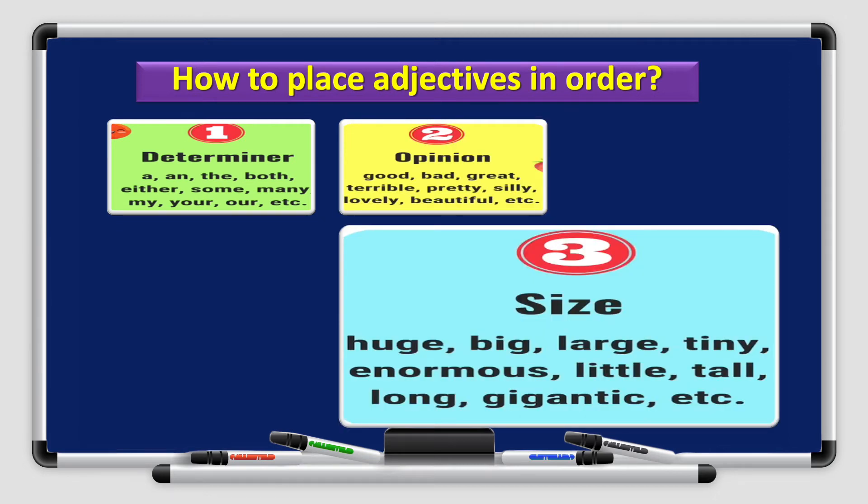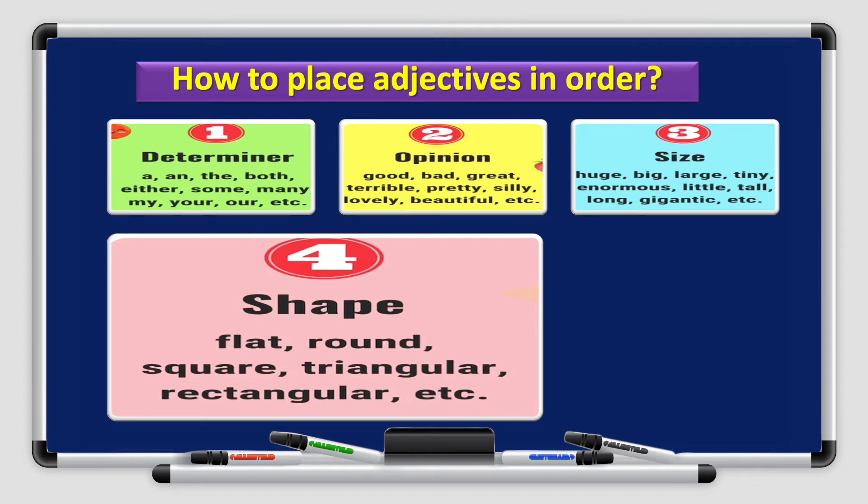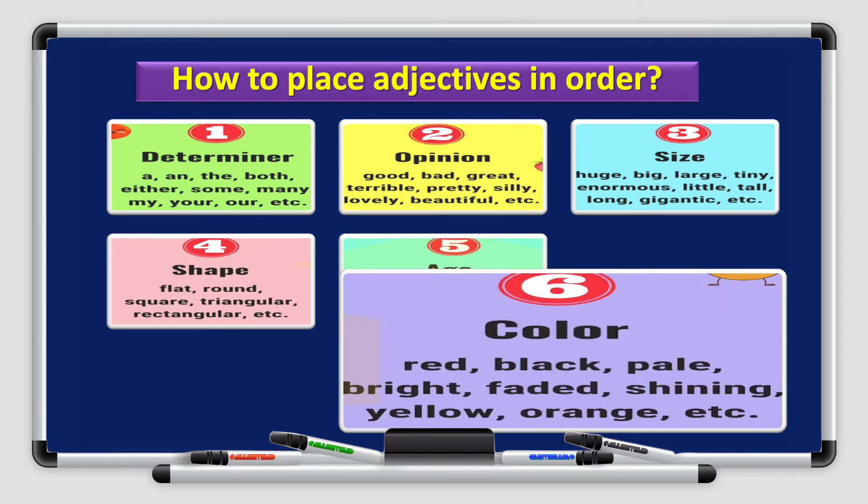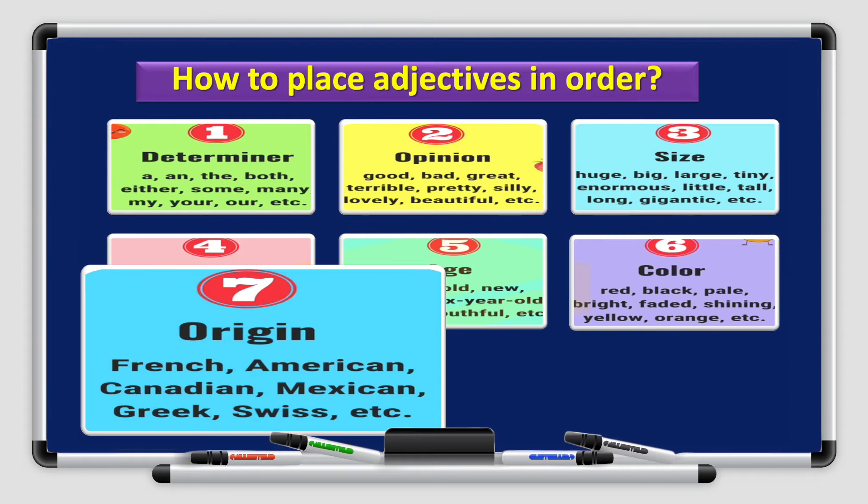Size comes after opinion. Is it huge, big, large, enormous. Shape. Is it flat, round, triangular, rectangular. Age. Young, old, new, ancient, antique, youthful. Color. Red, black, pale, bright, faded, orange, and other examples.